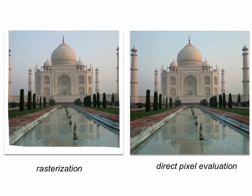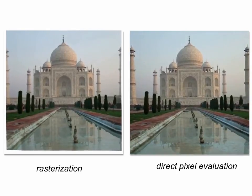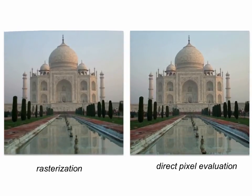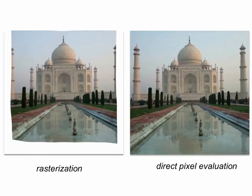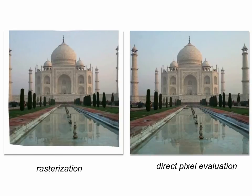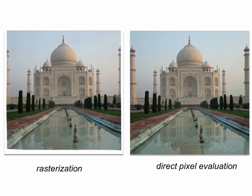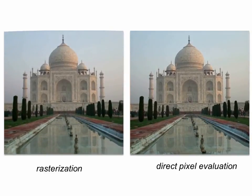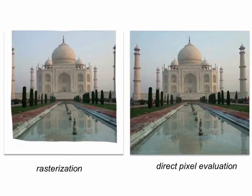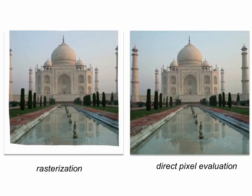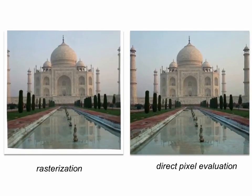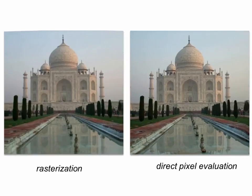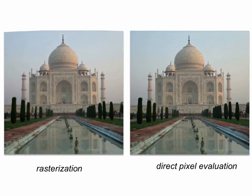To rasterize intermediate images, a common approach is to render a triangle mesh deformed using the vector field. Our direct pixel evaluation approach does not require the rasterization of a fine triangle mesh, and more importantly, can produce plausible values beyond the boundary of the halfway image, thus filling the entire rectangular domain of all intermediate image frames.